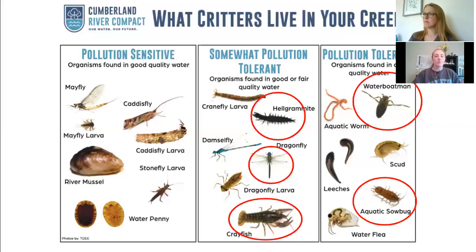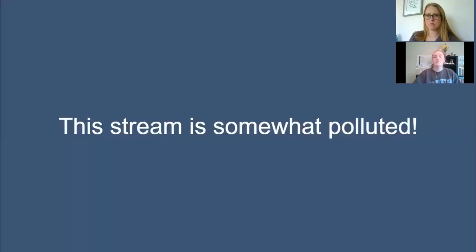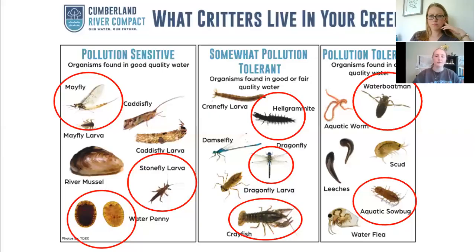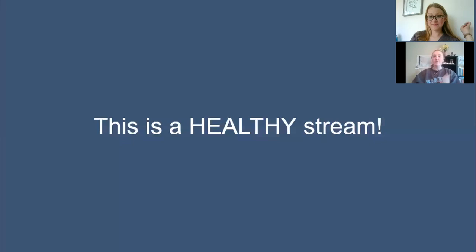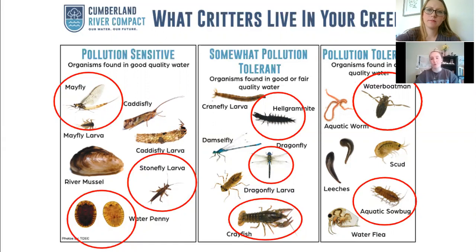We kept going and found a hellgrammite, a dragonfly, and a crayfish. Now our water looks only somewhat polluted — we started finding organisms that live in cleaner water, so it can't be all that bad. But we still have more in the bucket. We then found a mayfly, a water penny — which is the cutest animal in the world — and a stonefly larva. Now this is a really healthy stream system. We found an organism from each of the different groups, and having that biodiversity is really important for a strong creek community. This is what we want to see in our local streams and waterways.